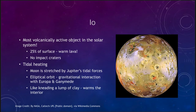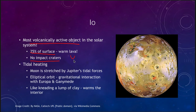Io is the most volcanically active object in the solar system — more volcanically active than the Earth — and it is about the size of our own moon. About 25 percent of the surface is warm lava, making it just a lava-covered world orbiting Jupiter. It has no known impact craters, making it the youngest solid surface we know of in the solar system. Even the Earth has nearly 200 impact craters, but Io is the only solid surface known to have none.